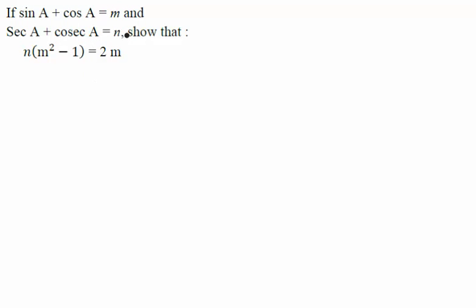Okay, so in this question it is given to us that if sin A + cos A is taken to be m and sec A + cosec A is taken as n, then we have to show that this relation is true: n(m² - 1) = 2m, right?